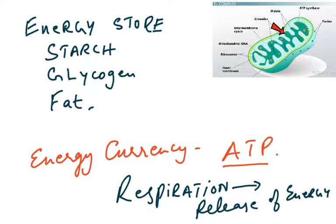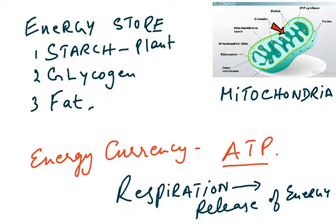The first chapter in the A2 syllabus is respiration. We often talk about respiration as something to do with energy and the mitochondria, which is where aerobic respiration takes place. We're going to talk about two things: number one is the energy store. Energy stores include starch, which is mostly in plants, glycogen, which is mostly in animals and bacteria, and fat, which is present in both.